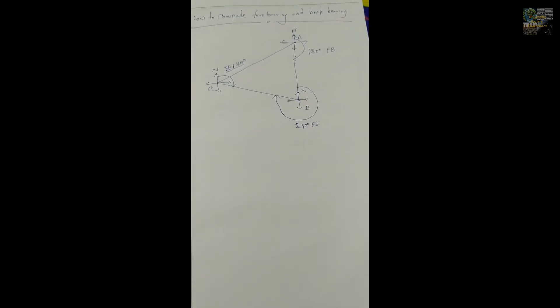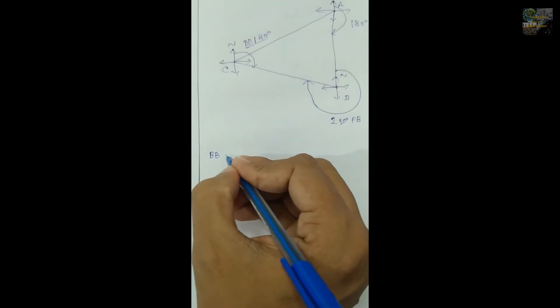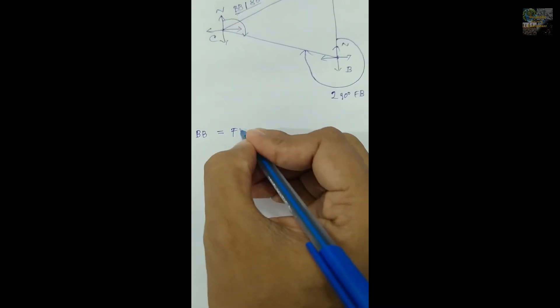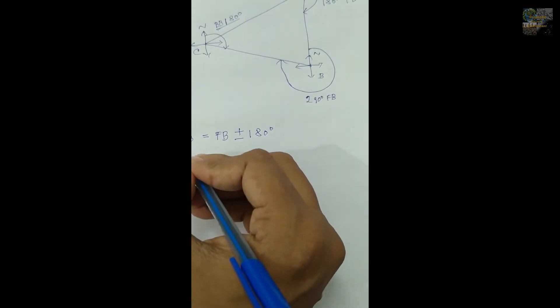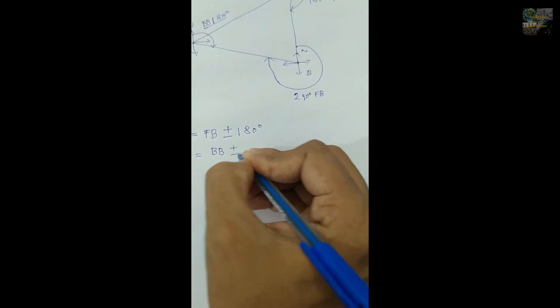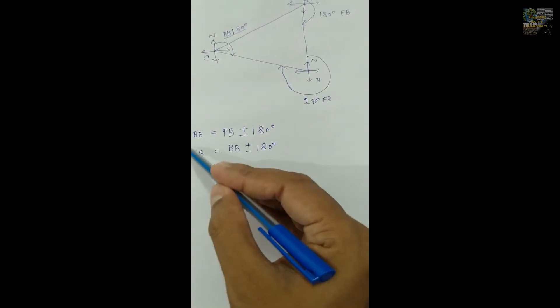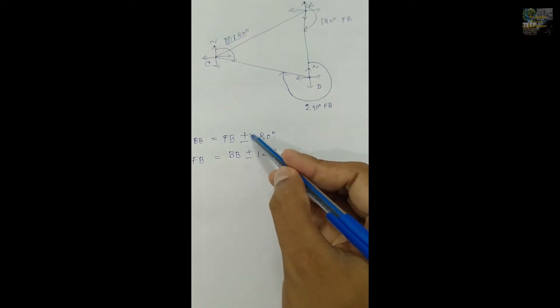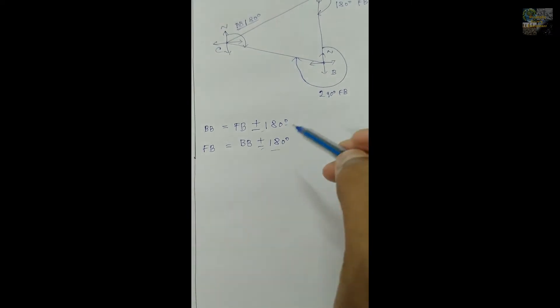Now I am going to calculate the fore bearing and back bearing. To compute the back bearing value, the algorithm is: BB (back bearing) equals FB (fore bearing) plus or minus 180 degrees. And to compute fore bearing, the algorithm is: FB equals BB plus or minus 180 degrees. Keep in mind that if the bearing value — whether fore bearing or back bearing — is greater than 180 degrees, then minus will be applied. If the value is less than 180 degrees, then plus will be applied.